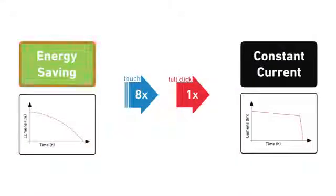Finally, I'm going to show you how to select one of two energy modes to maximize the brightness or the battery life. By using the tail cap and touching 8 times and a full click on the 9th, you'll select either the energy saving mode or the constant current mode. The light will let you know which energy mode you're in. In energy saving mode, the light will slowly dim down and turn off. In constant current mode, the light will remain at full brightness and then turn off.